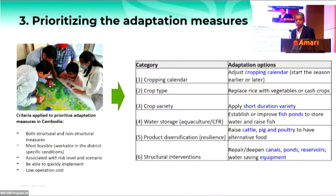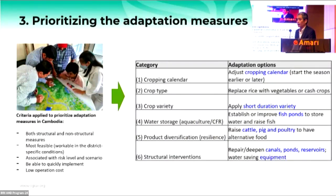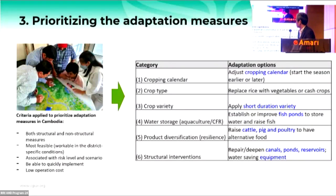Based on the climate risk maps, we work with local stakeholders at district level to prioritize adaptation methods. For each small area they can build a table of suggested adaptation measures, for example: changing crop calendar, crop type, crop variety; improving water management like canals or freshwater storage; product diversity; or inclusion of livestock and fishery.